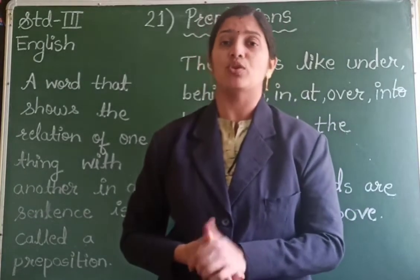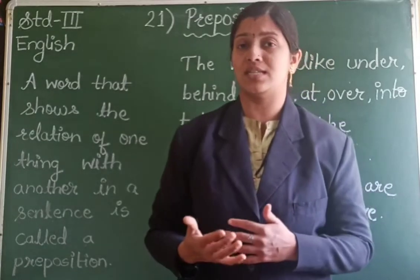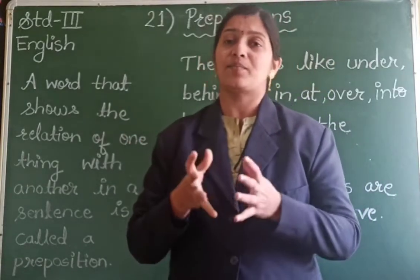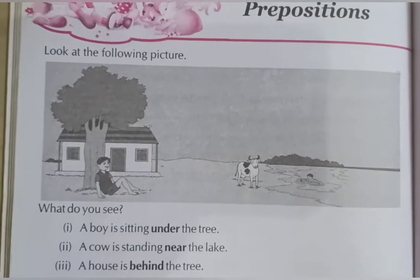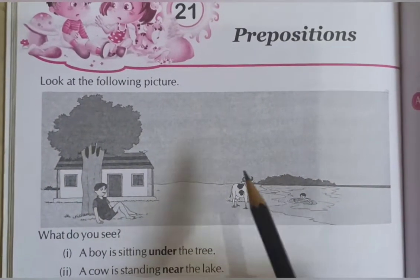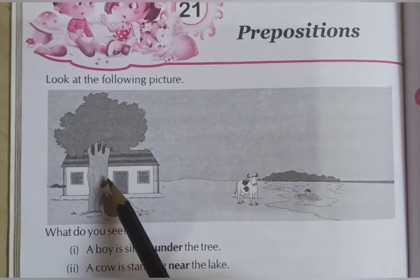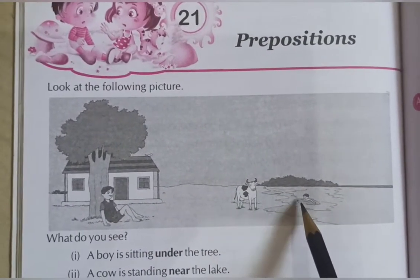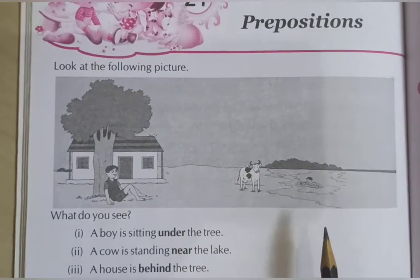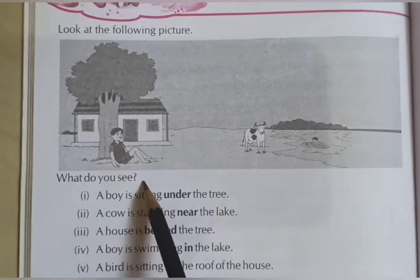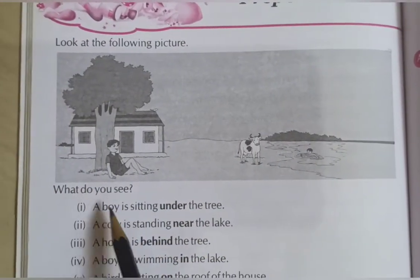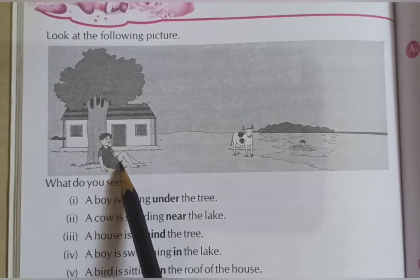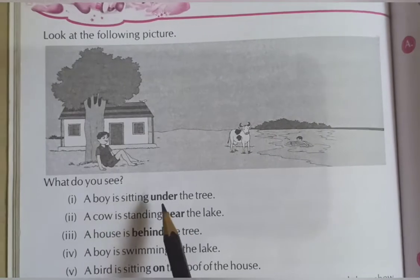Now let us move on to the grammar book. On page number 62, we have a picture and below it are sentences to help us understand prepositions. Here we can see a house, a tree in front of the house, and a man sitting under the tree. There is also a lake, and a boy is swimming in the lake. A cow can be seen as well. So where is the boy? He is under the tree. The position of the boy is under the tree, so 'under' is a preposition.